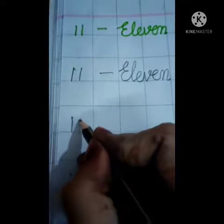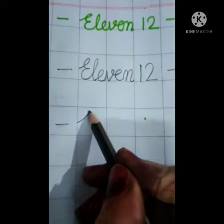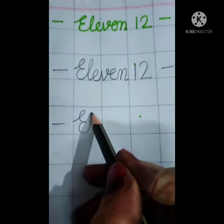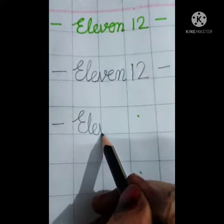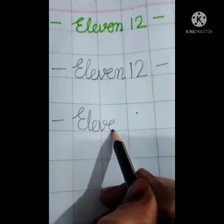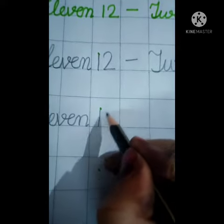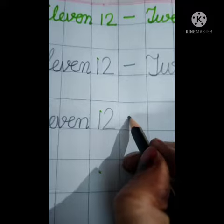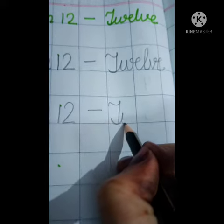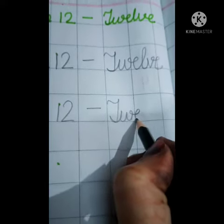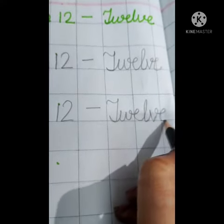11. E-L-E-V-E-N, 11. Write here number 12. T-W-E-L-V-E, 12.